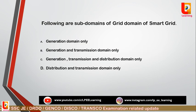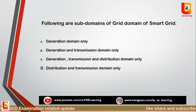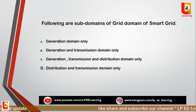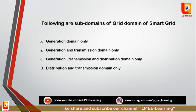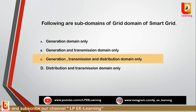Question 10: The following are the sub-domains of the grid domains of smart grid — option A: generation domain only; option B: generation and transmission domain only; option C: generation, transmission and distribution domain only; option D: distribution and transmission domain only. Correct answer is option C: generation, transmission and distribution domain only.